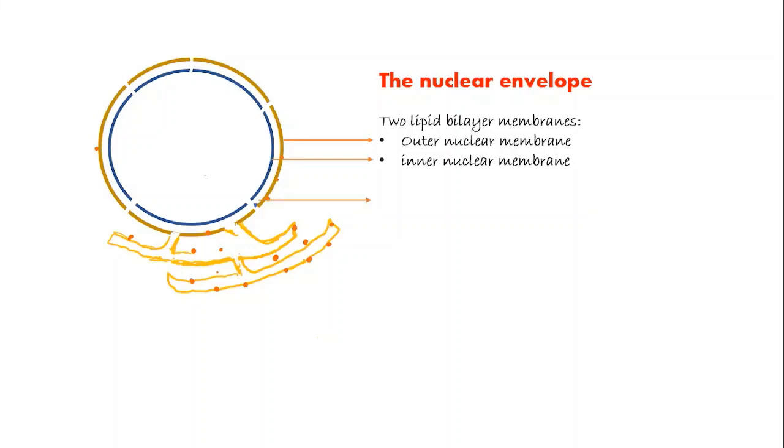The space between these 2 membranes is called perinuclear space, and it is usually about 20 to 40 nanometer wide. While the lipid bilayers are separated by a thin space between them, studies have shown them to be fused at the pores. This double layered structure consists of phospholipids.